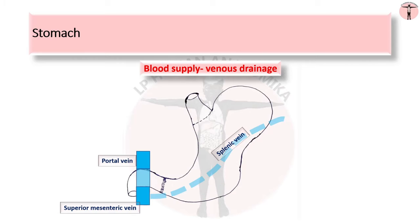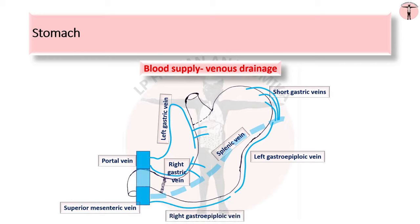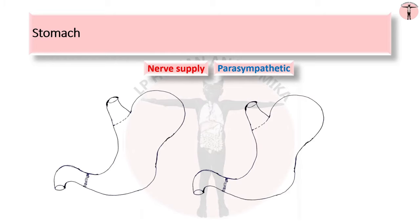The veins drain into the portal circulation. The left and right gastric veins drain directly into the portal vein. The short gastric veins and the left gastroepiploic vein join the splenic vein. The right gastroepiploic vein joins the superior mesenteric vein before it joins the splenic vein.